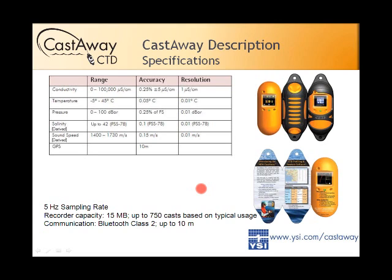Moving to the specifications page: the sampling rate is 5 Hz. The typical fall rate is about one meter per second without the weight. The recorder capacity is 15 megabytes, practically enough for about 750 casts.